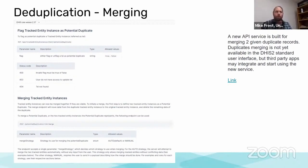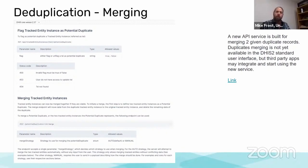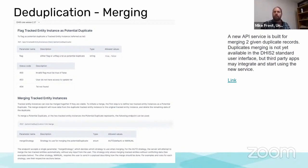We are also pushing forward on the manual merging of tracked entity instances. In future releases, you'll start to see user interfaces that allow for that. For now, the API is there and allows for this, and external applications you may have been using for deduplication can now communicate through the API, receive the list of potential duplicates, and manage merging in an automated way.